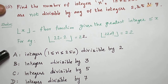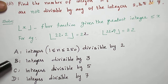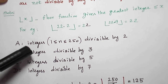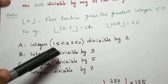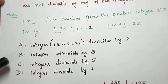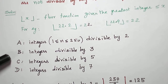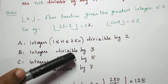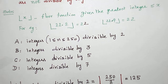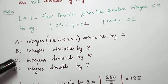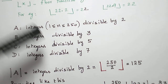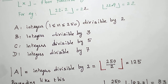Let us define sets A, B, C, and D as follows. Set A is the set of integers between 1 and 250 that are divisible by 2. Set B is the set of integers divisible by 3. Set C is the set of integers divisible by 5. Set D is the set of integers divisible by 7.